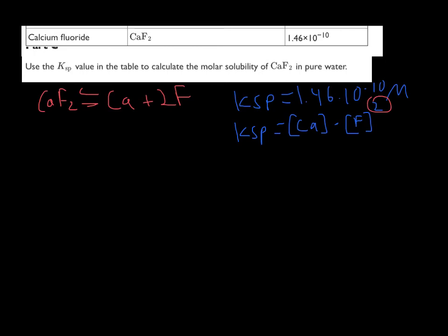Now, let's go over here and solve the problem. So, let's write that down. 1.46 times 10 to the minus 10 equals Ca multiplied by F2.